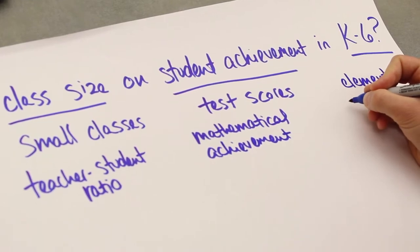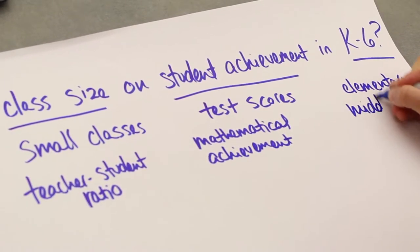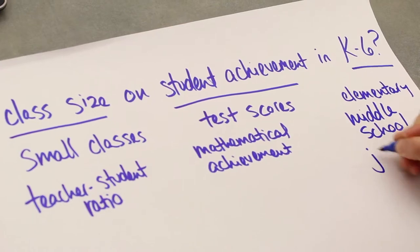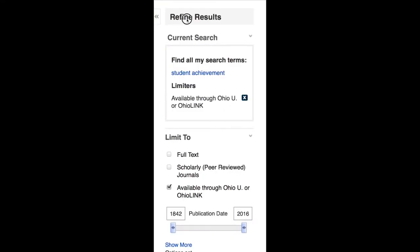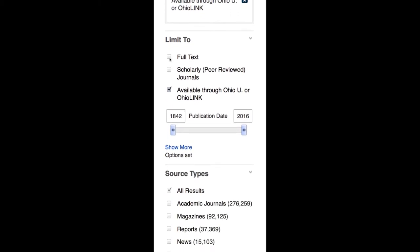As you find these additional terms, write them down on the piece of paper under the thesis statement. Now that you have begun to create a vocabulary, you can broaden your search to include more articles and items in your results list.